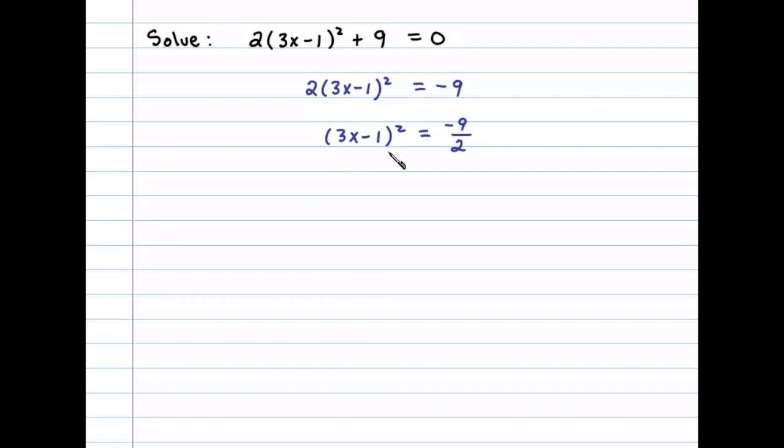Once we isolate that square term, we can apply the square root property, which leaves us with 3x - 1 = ±√(-9/2). Before I continue solving for x, I'm going to simplify the right side.